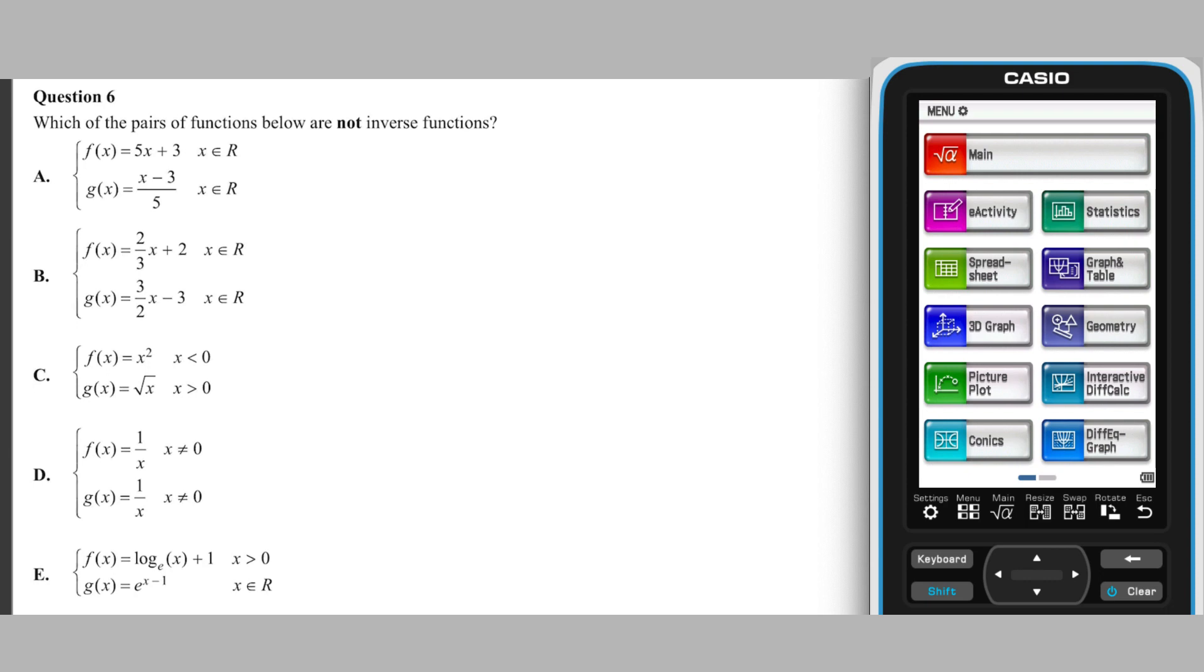In the case of B, for example, this process yields 3 over 2 multiplied by x take 2, which is equivalent to the rule given for g of x, so B is all good and not our answer.